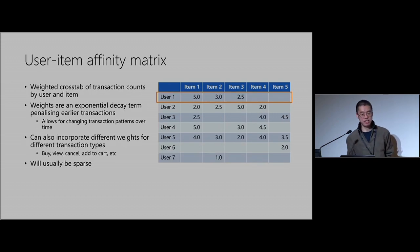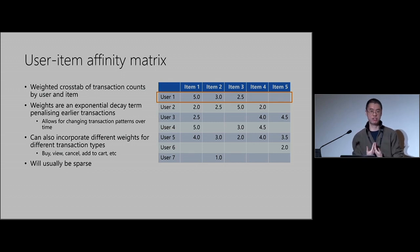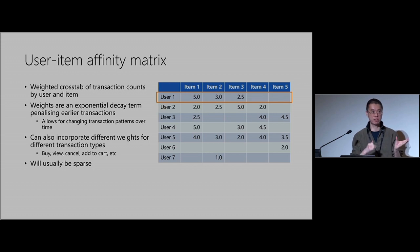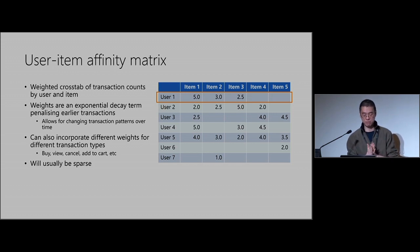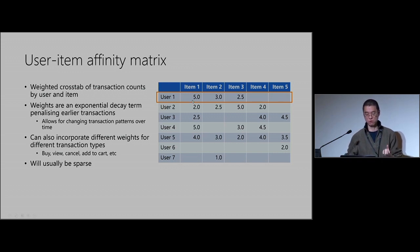The other main entity is the user-item affinity matrix, which measures the strength of the relationship of a given user with a given item. It's a weighted crosstab of transaction counts. So user one might have bought or seen item one five times, item two three times, and so on.